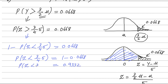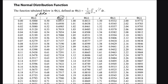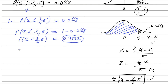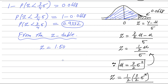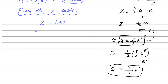So P(Z < 3/(4 sigma)) = 0.9332. Looking up 0.9332 in the Z table, the corresponding Z value is 1.50. We already have Z equals 3 over 4 sigma, so setting 3 over 4 sigma equal to 1.50: multiplying both sides by 4 gives 3 sigma equals 6, and dividing by 3 gives sigma equals 2.